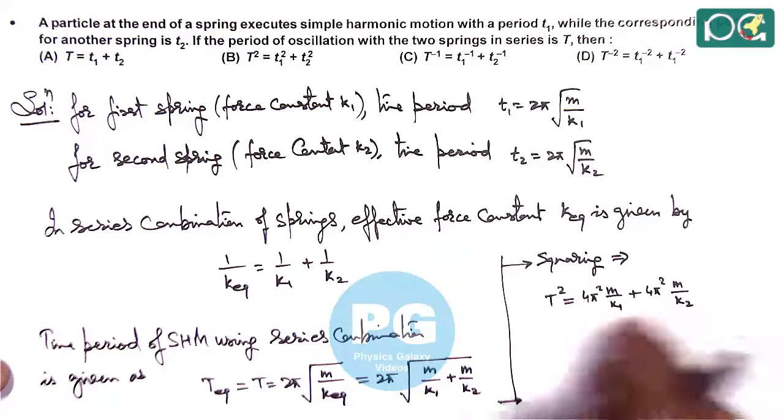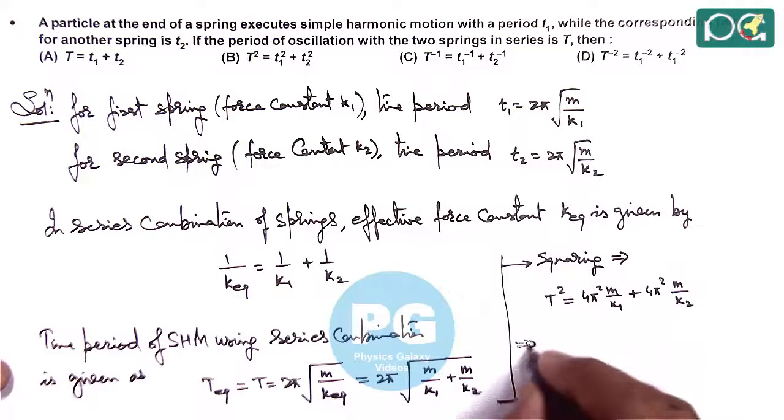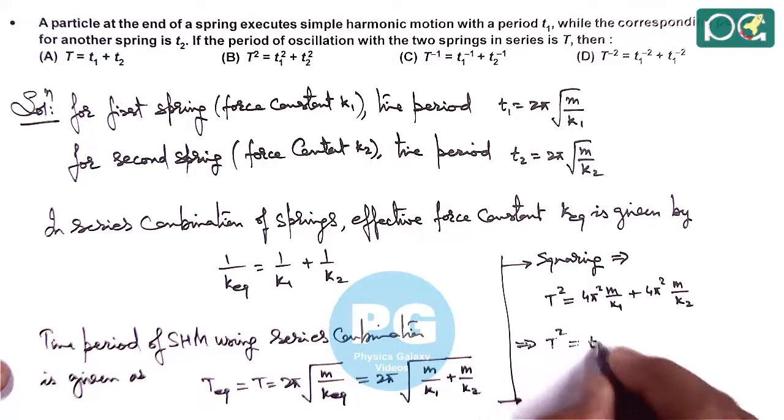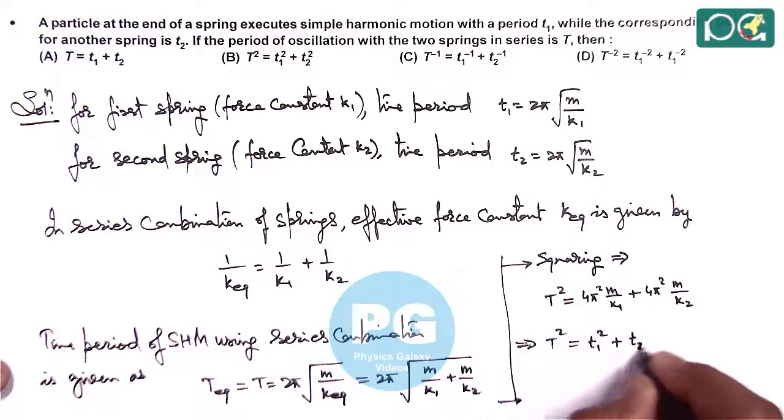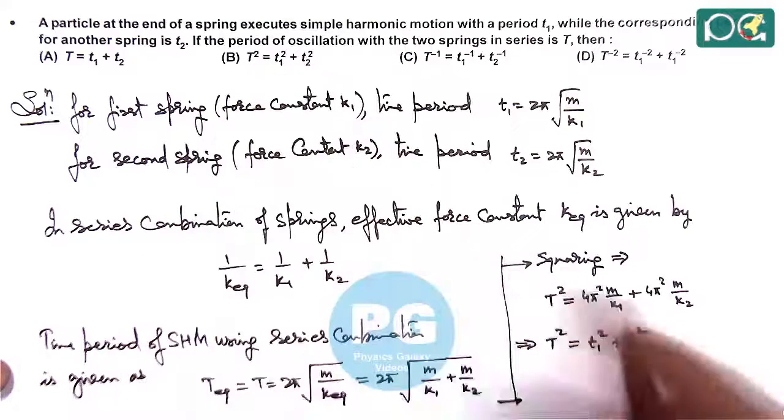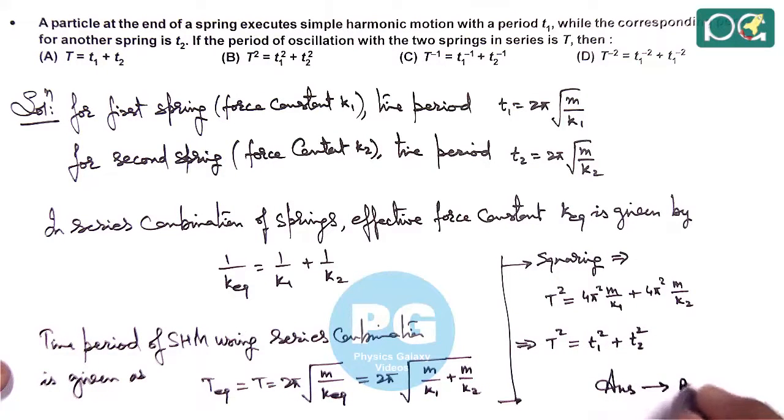These two values we can write as T1² and T2², giving us T² = T1² + T2², which matches with option B. So the answer to this question is option B.